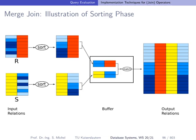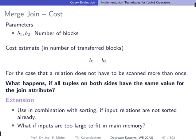Considering the cost, we did this also for the block-based nested loop join. Here we assume we have two parameters, which is basically the number of blocks from the left input and the right input. Then the estimate in terms of number of transferred blocks is just the sum of the two values.